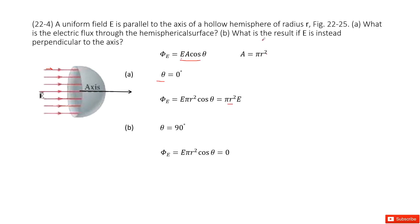The next one tells you what is the result if E is instead perpendicular to the axis. So in this case, what if E is perpendicular to the axis? Now E becomes this way.